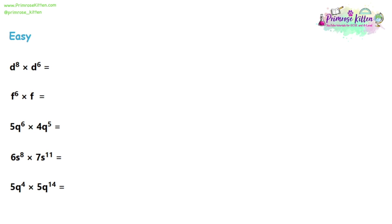We're going to have a look at the laws of indices using algebra. If you haven't already watched the laws of indices video with just numbers, then you'll understand what we're going through in this video. The first law of indices is that if you have a base number to a power and you multiply it by the same base number to another power, that is the same as having that base number with the powers added together. So basically if you're multiplying, you can add the powers as long as the base is the same on both sides.